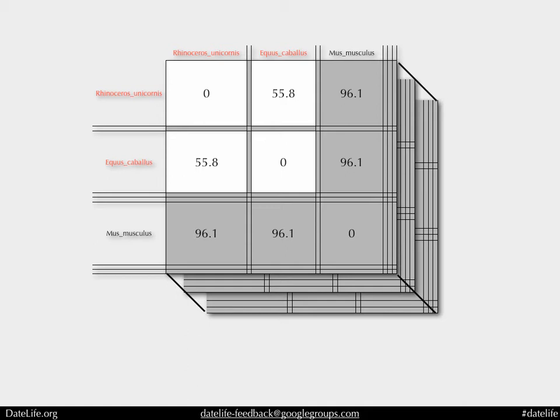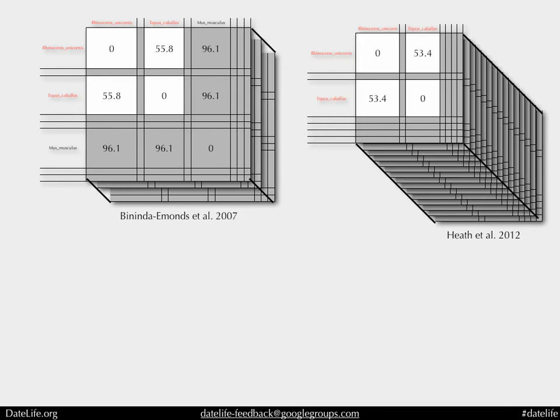You do this for all the trees in the dataset. You can have multiple datasets — Bininda-Emonds' dataset had three trees, while Tracy Heath's dataset had 1,000 trees. You stack these into a three-dimensional array, and you can very quickly get data from each dataset and compute the median and distribution shown in the HTML output.